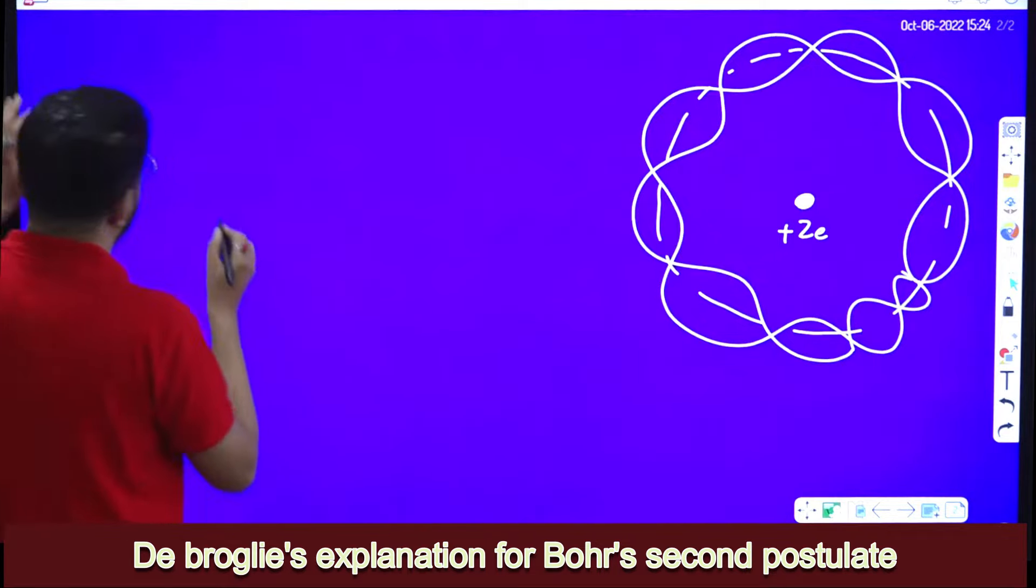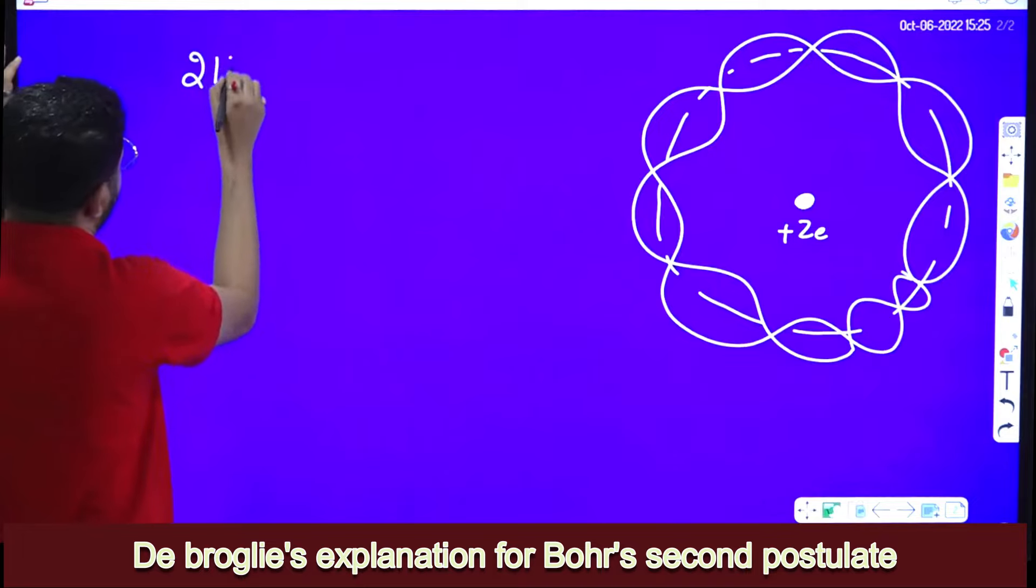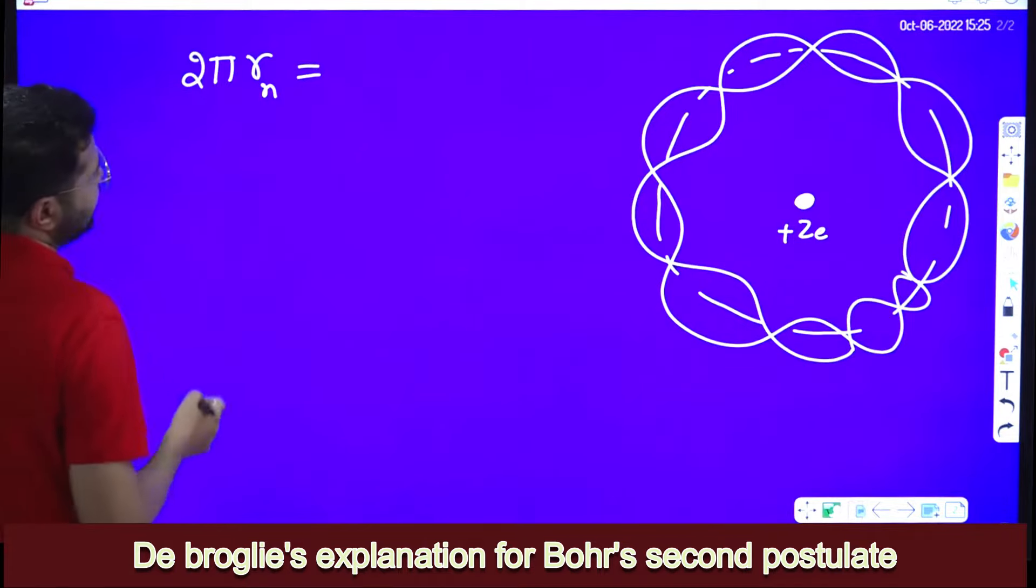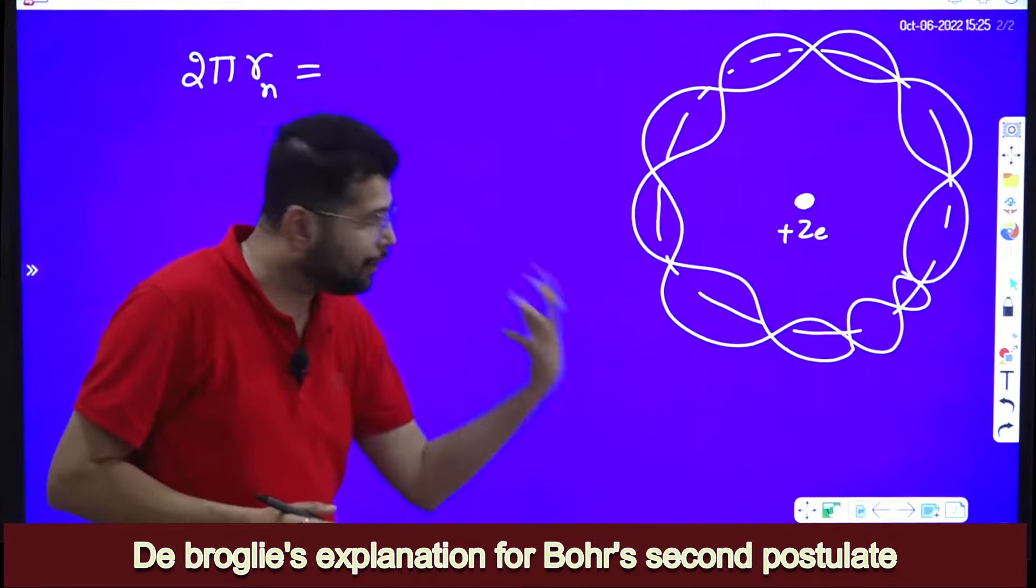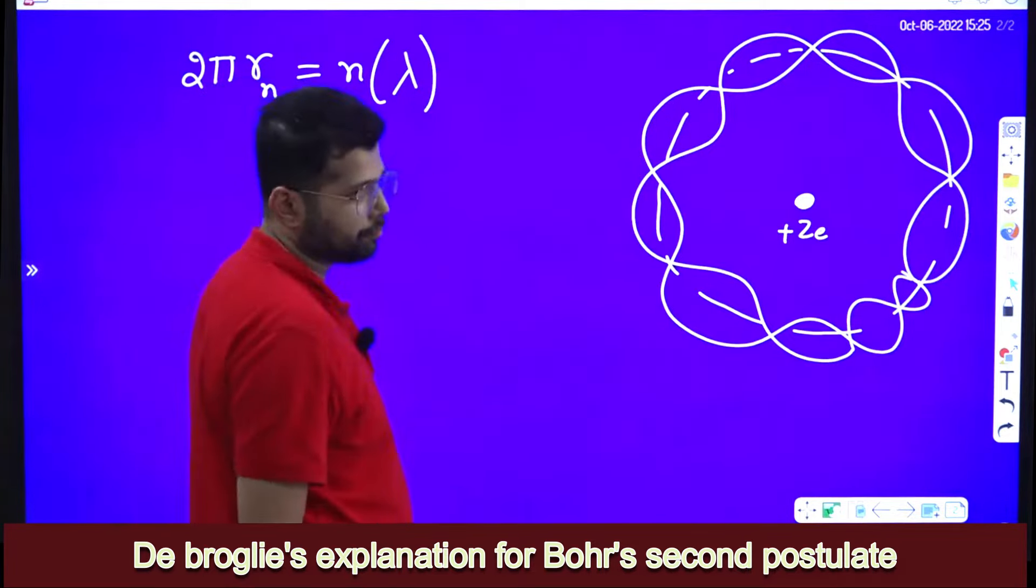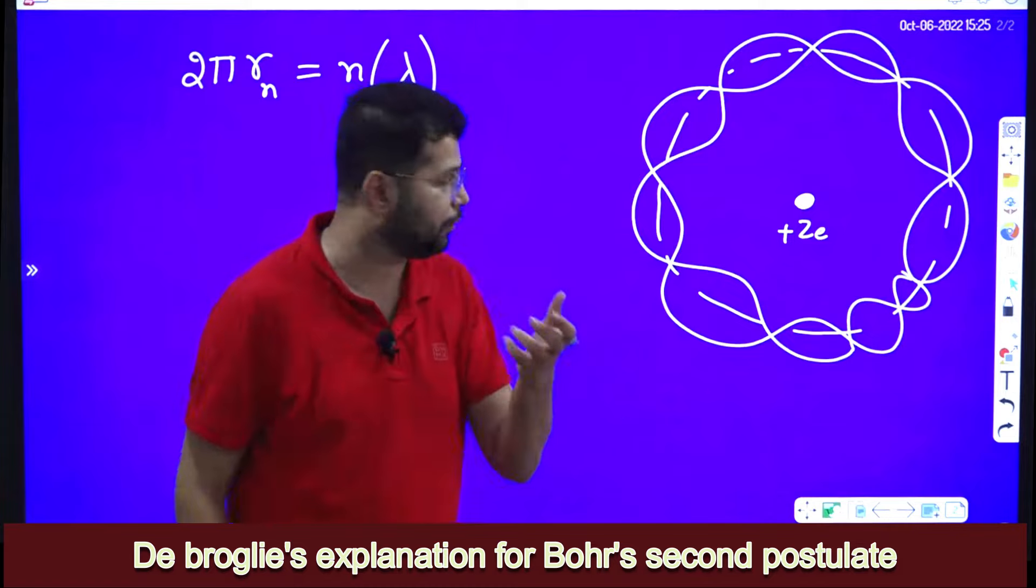Now, what he tells is, what is the length of the path? Length of the path is 2πr_n, correct? 2πr—say this is the nth orbit, 2πr_n—so this is the length of the path. That length of the path should be integral multiple of lambda, should be integral multiple of lambda.